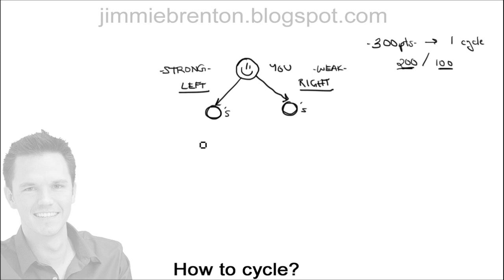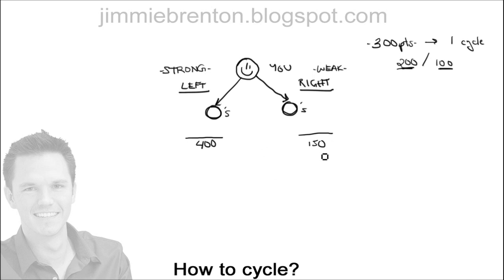Let's look at an example. Say you get 400 points on your left side and 150 points on your right side for that week. Just a side note: this happens every single Wednesday night around 9 p.m. Pacific Standard Time — Beachbody runs its systems, zeros everything out, and does the math. Around that time, if you see all your volume drop to zero, it's okay because Beachbody is figuring out all the math and will reset your numbers back to zero.